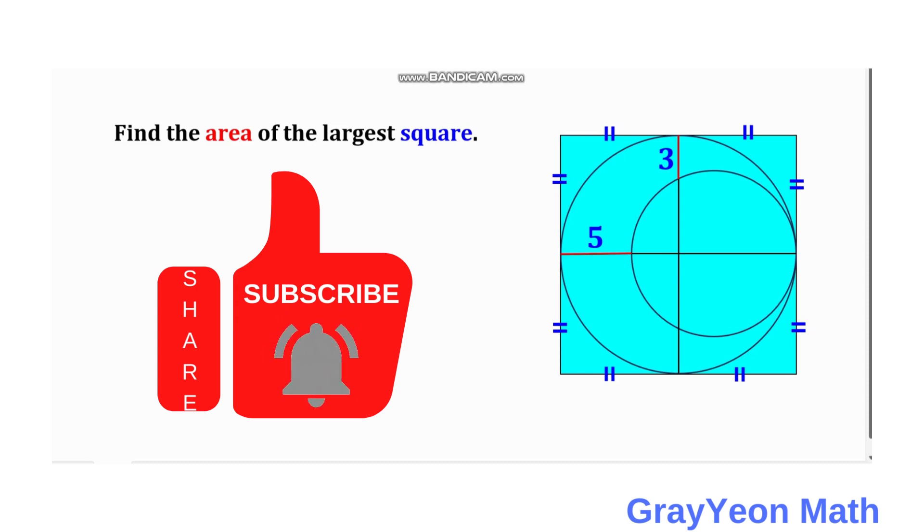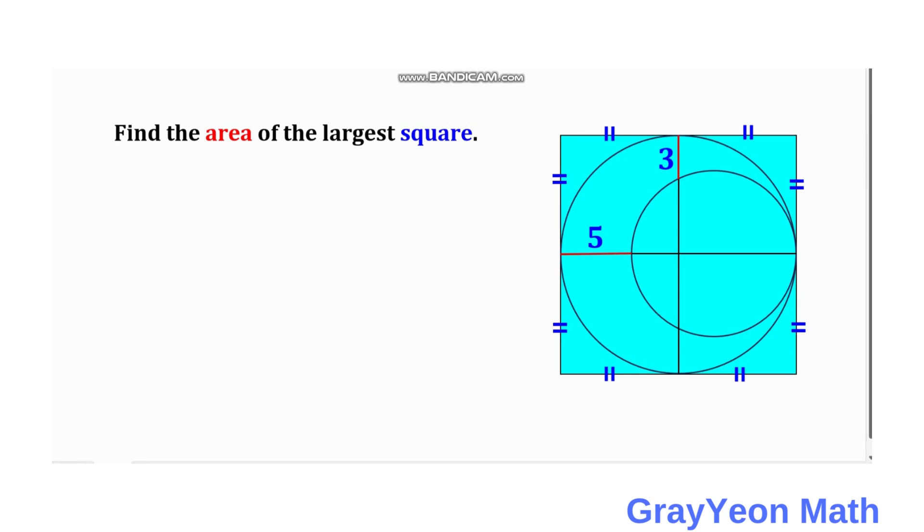Welcome to GrayYeon Math. To solve this problem, we have a square, and inside the square are two circles and two chords formed by these two circles: five units and three units. The circles are at the same center inside the square and divide the sides of the square through the tangents. We are required to find out the area of the largest square. So first thing we need to do...